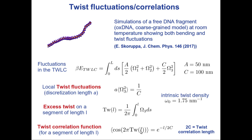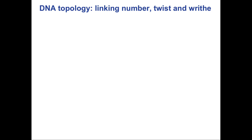This is a very similar definition to what we applied for bending fluctuations. These are very simple calculations and this concerns a piece of DNA which is freely fluctuating, as shown in these simulations. So we want to discuss what happens when forces and torques are applied to DNA. For discussing these situations we have to introduce a few concepts of DNA topology.